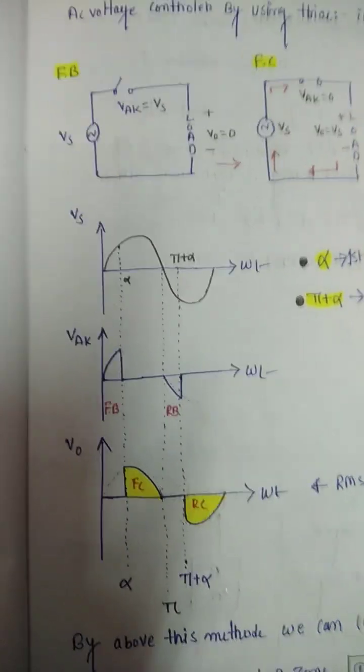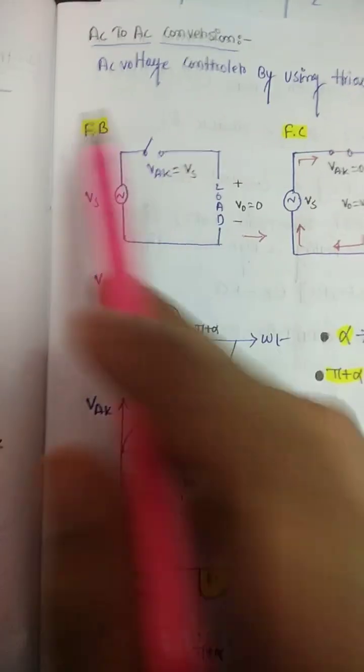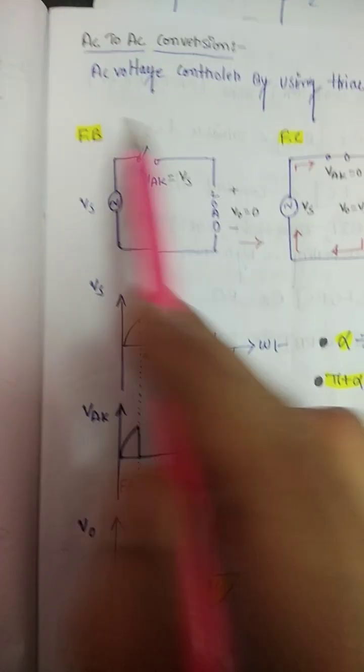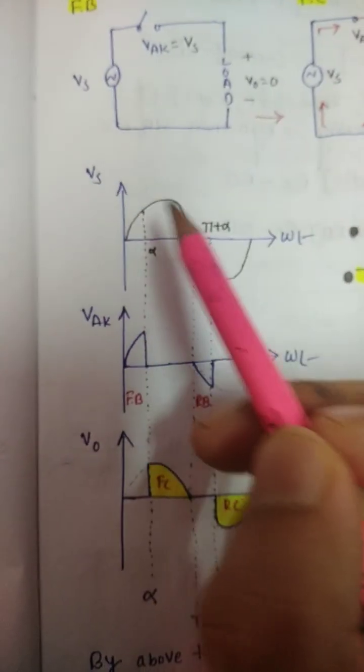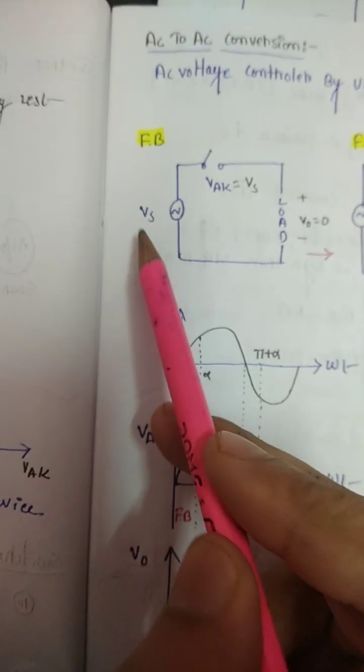To work the AC voltage controller using the triac, basically the triac has four modes: forward blocking, forward conduction, reverse blocking, and reverse conduction. Here is the AC voltage source.